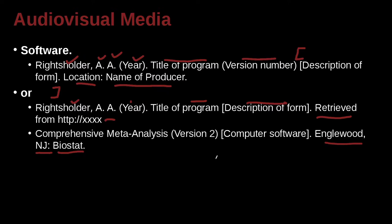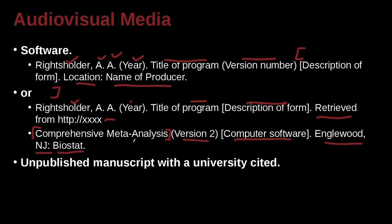How do you find this information? It may be inside the manual, or it may be online — something about the company. It is computer software, version 2. Do we have a person's name? No — in this case, we're just going to use the computer program's name. Comprehensive Meta-Analysis is the name of the computer program.